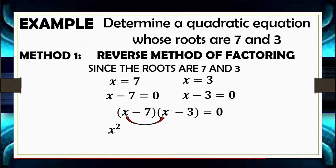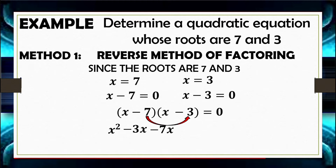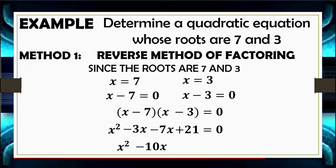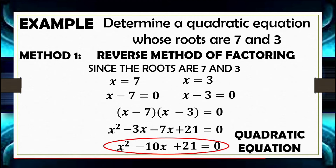X times X has a product of X squared. The outer terms X and negative 3 give negative 3X. The inner terms negative 7 and X give negative 7X. And the last terms negative 7 times negative 3 give positive 21. Combining the linear terms negative 3X and negative 7X gives negative 10X. So our quadratic equation is X squared minus 10X plus 21 equals 0.